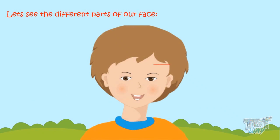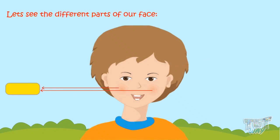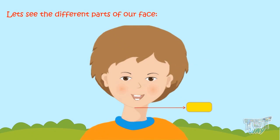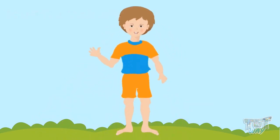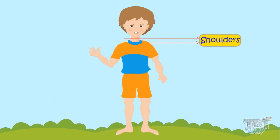Which part is this? This is our forehead. And what do you call this part? These are our cheeks. And this? This is our chin. Now let's see our body parts. This is our neck. These are our shoulders.